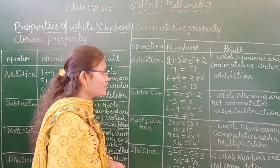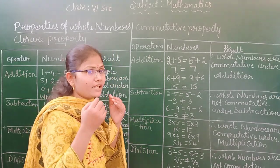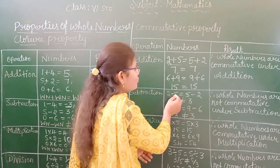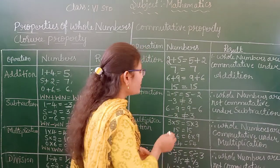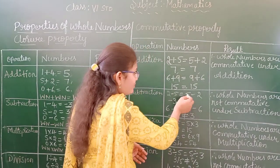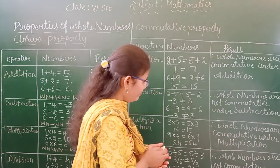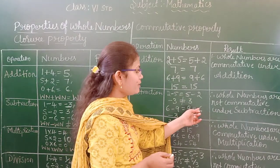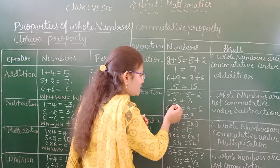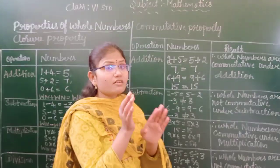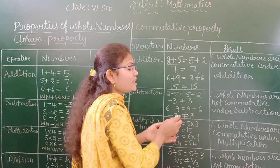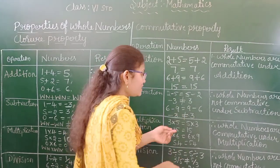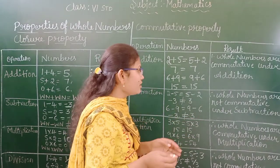Next, subtraction. If you subtract any two whole numbers in any order: 2 minus 5 gives minus 3, but 5 minus 2 gives 3. Also, 6 minus 9 gives minus 3, but 9 minus 6 gives 3. Is minus 3 equal to 3? No, it is not equal — one is negative and one is positive.